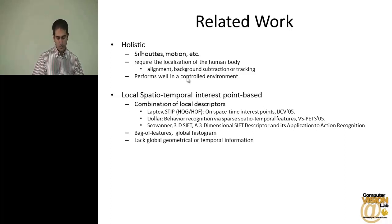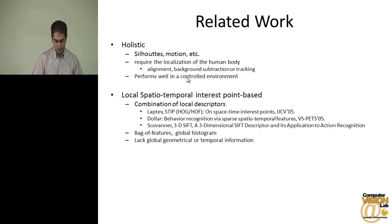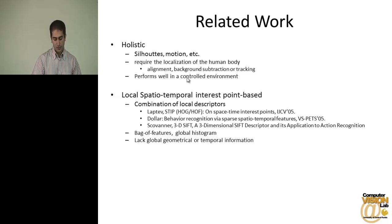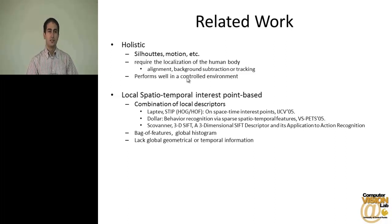The more popular approach is to extract local descriptors in a neighborhood of local spatial-temporal interest points. One popular local descriptor is STIP, proposed by Laptev, which detects 3D Harris corners and extracts histograms of oriented gradients and histograms of optical flow around these interest points. Another descriptor is the Dollar descriptor, which applies a Gaussian filter in space and a Gabor filter in time. There is also SIFT and the 3D version of SIFT, which detect maxima and minima in scale space and compute histograms of gradients descriptors.